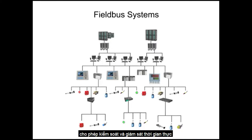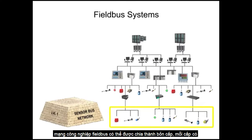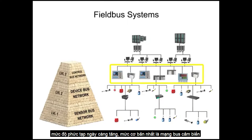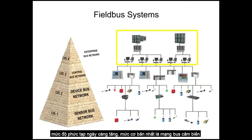Fieldbus industrial networks can be broken down into four levels, each with increasing levels of complexity. The most basic level is the sensorbus network.